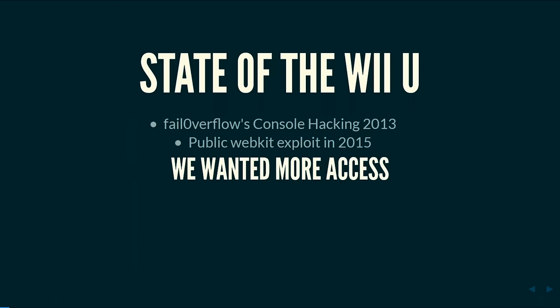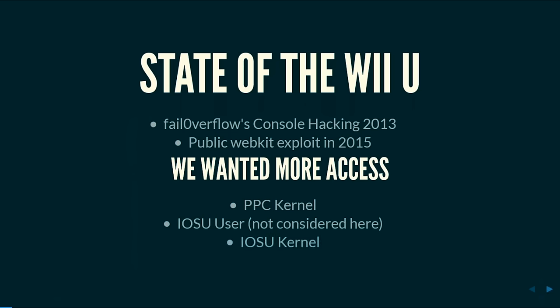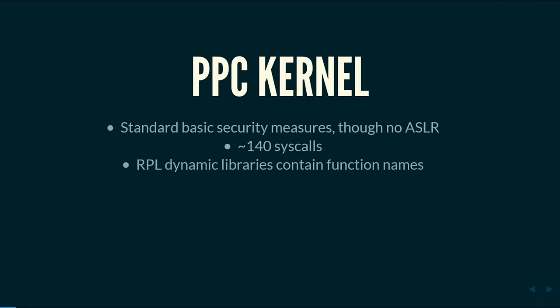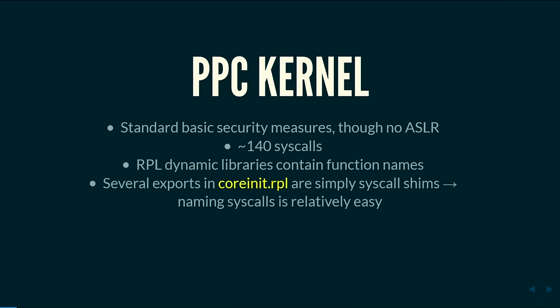Da gab es dann einen öffentlichen Exploit und wir wollten einfach mehr Zugang als nur die Konsole zu benutzen. Seitdem läuft der Kernel auf einem PPC. Heute sprechen wir über Kernel-Exploits. Der PowerPC-Kernel hat lauter Standards und Sicherheitssachen, kein ASLR — was es uns allen einfacher macht — und hat 140 Syscalls. Der RPL-Mechanismus der Wii U für dynamische Bibliotheken erlaubt es uns, alle Syscalls sehr einfach zu benennen.